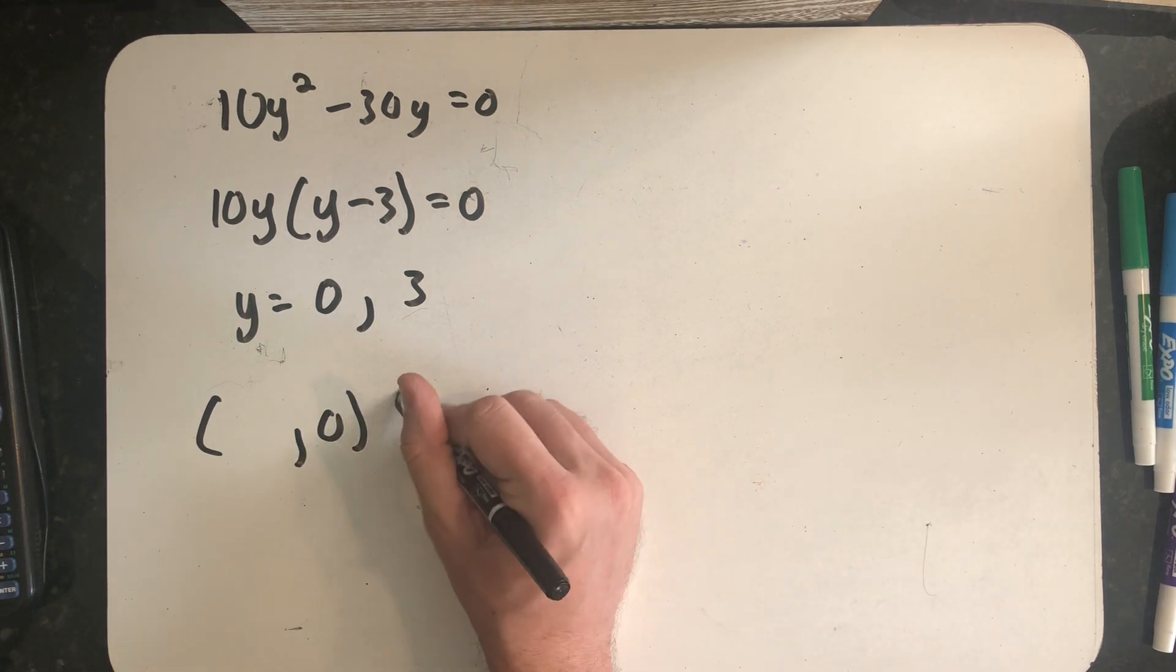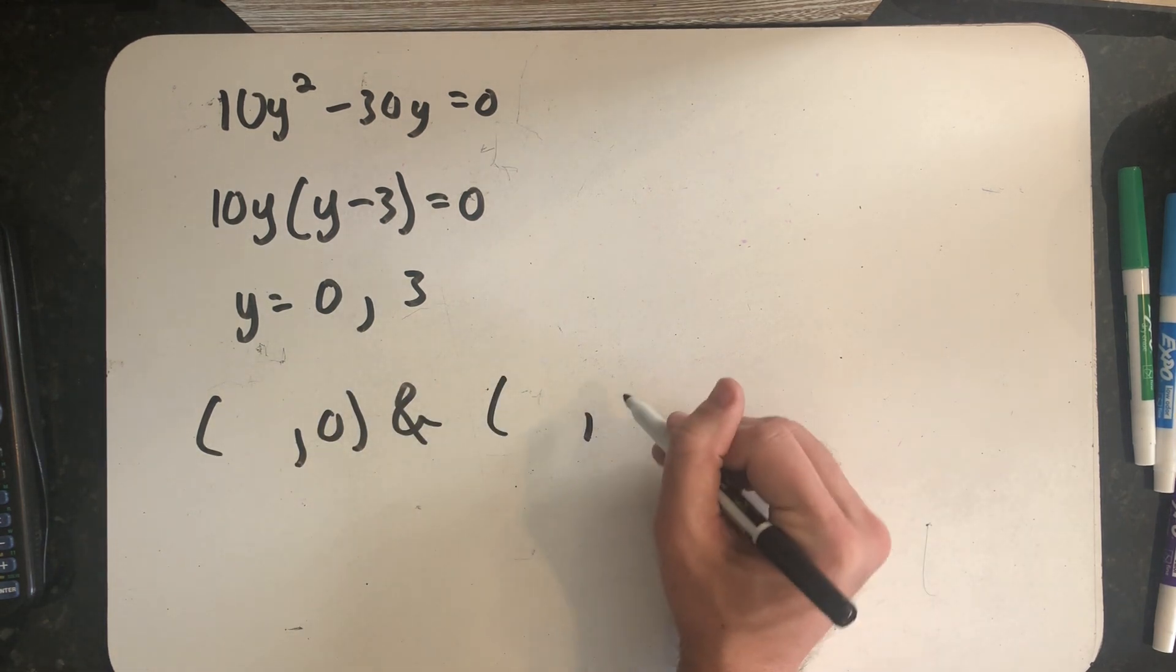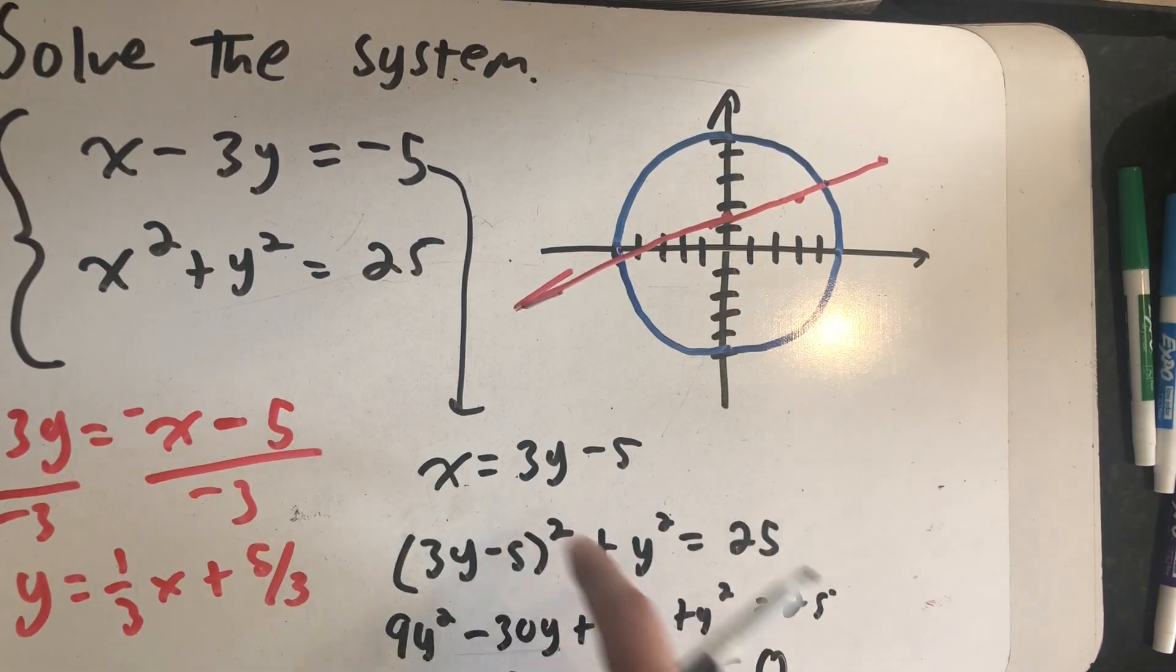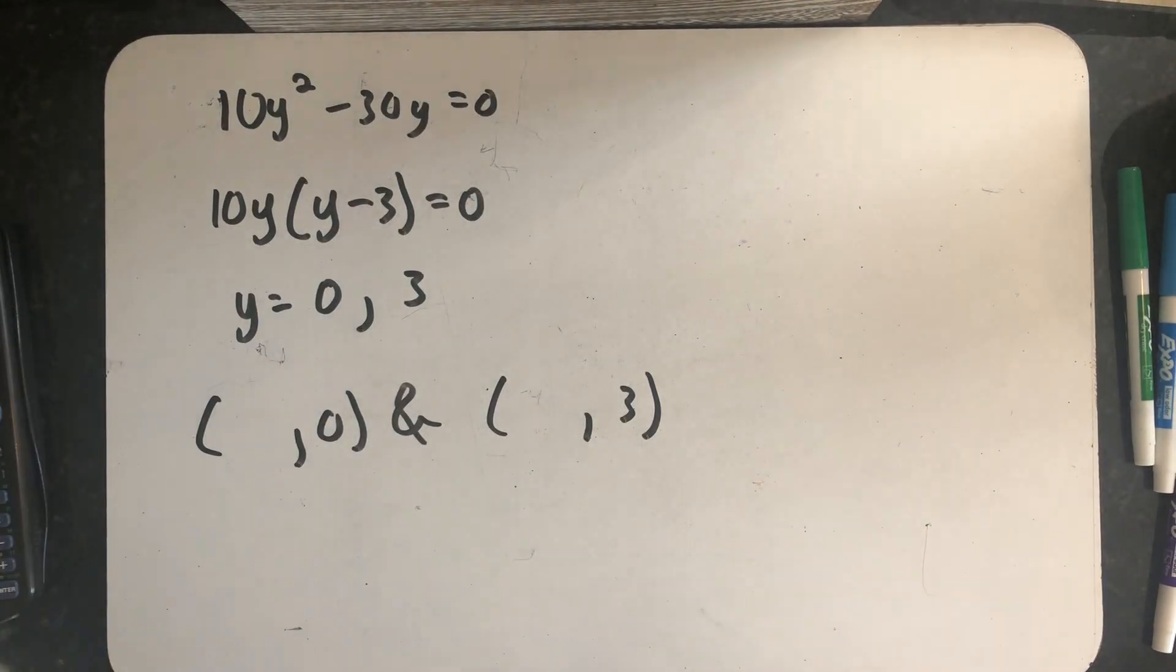So now all I have to do is find the x coordinates that match those y values. Fortunately, I have an equation here that says x equals 3y minus 5.